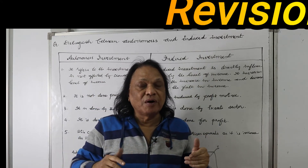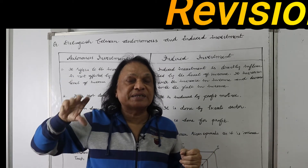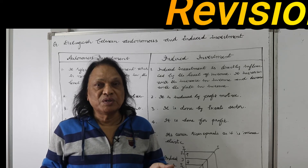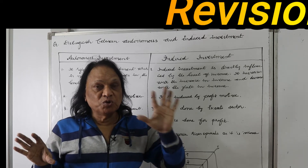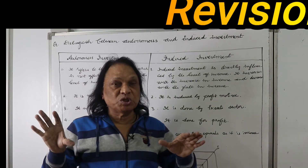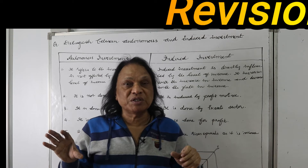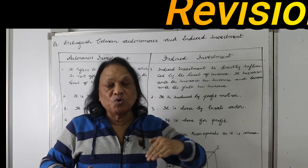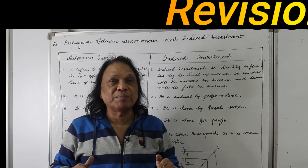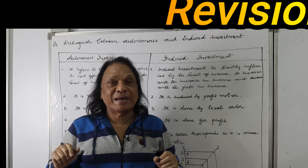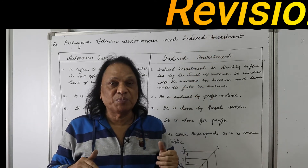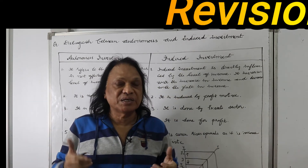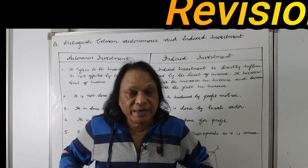The autonomous investment curve is parallel to the x-axis and is income inelastic. The induced investment curve is rising upwards and is income elastic.